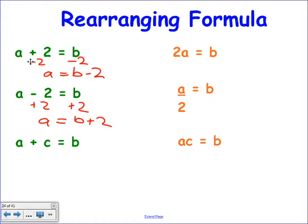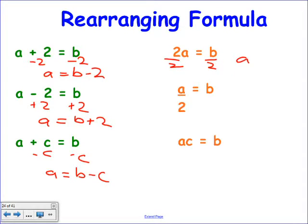Here's a trickier one: A plus C equals B. I want A on its own. Take away C on both sides — left with A equals B minus C. Now look at multiplying and dividing. I've got 2A equals B. How do I get A on its own? Do the opposite — divide by 2. Now A is on its own: A equals B over 2.